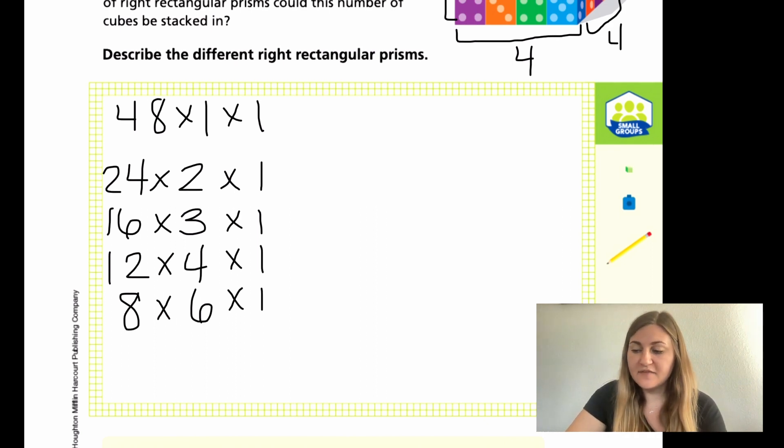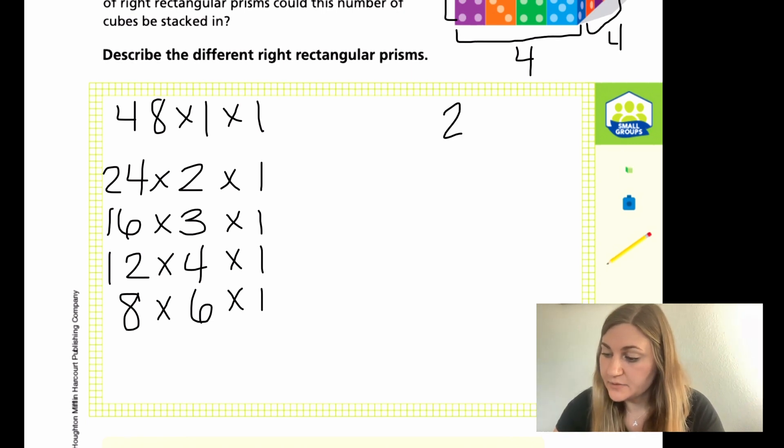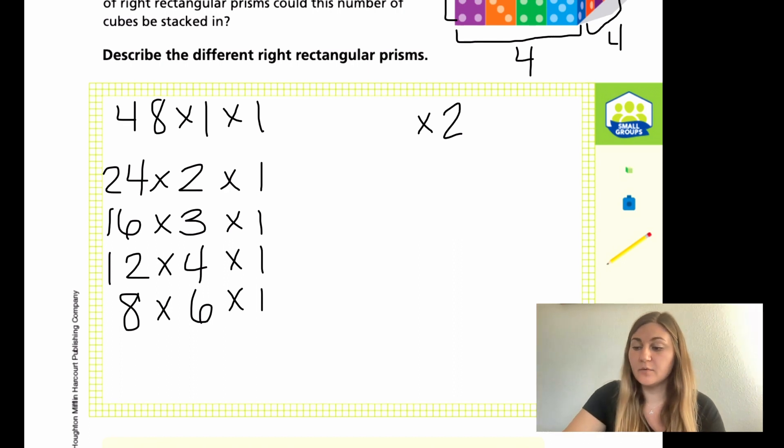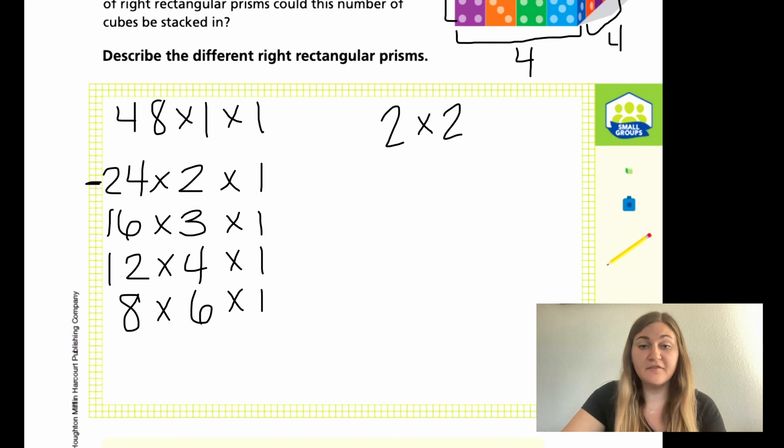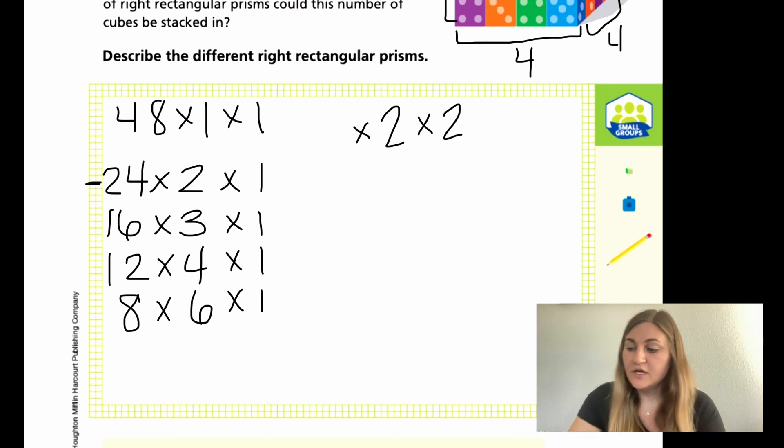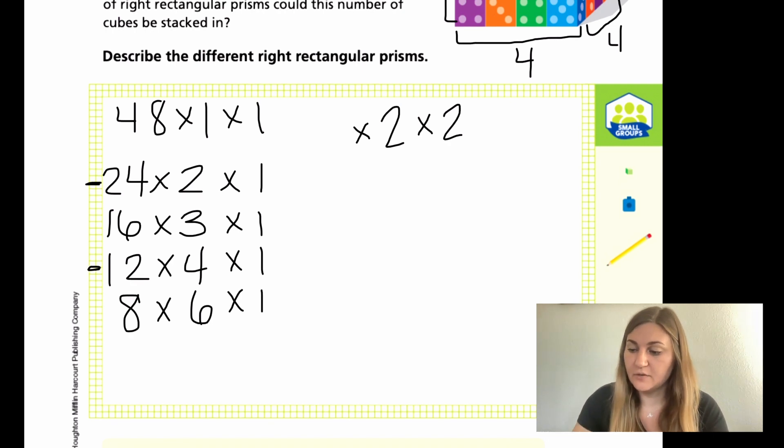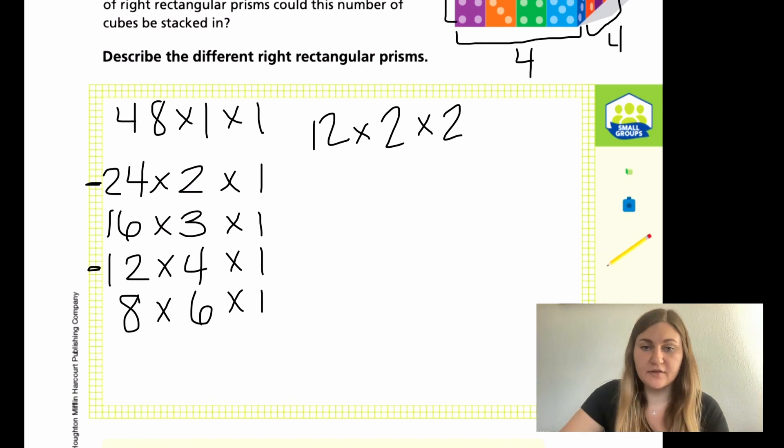So now what if I made the width 2? I know that if it were 1, it would still be 24. I already did that option. So what if I made it also be 2? Because that would be a different variation of my cubes. So 48 divided by 4, because I know I have 2 times 2. We did that earlier and we know that it would be 12. So 12 times 2 times 2 is another variation that would give me 48.